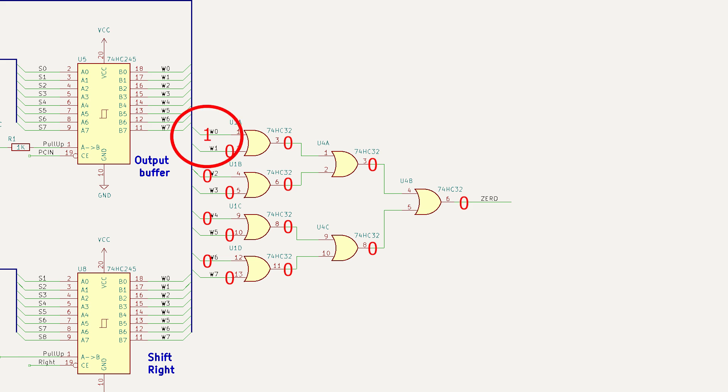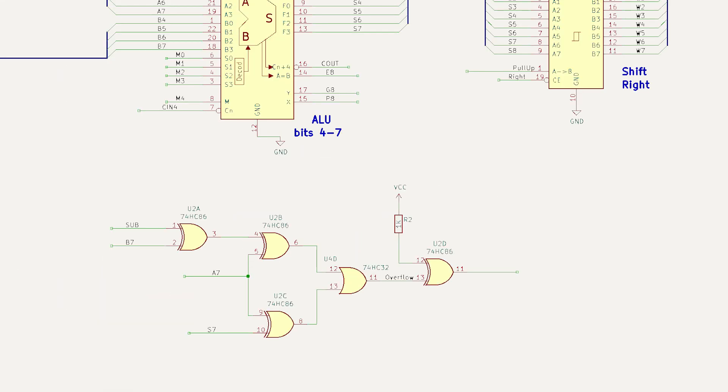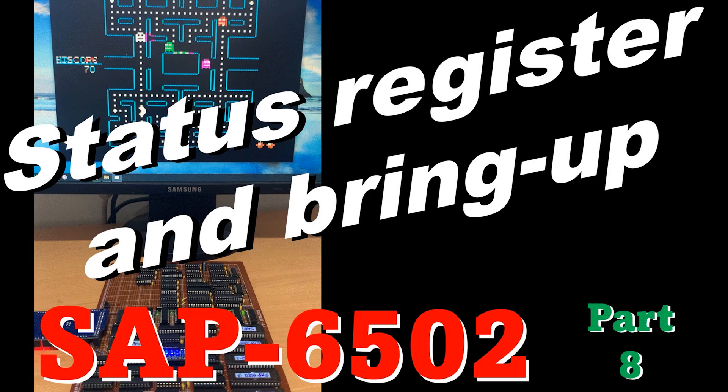Actually, this signal should be called zero bar and not zero, because it goes low when a zero is detected. The last piece of logic I'm going to need to put on the ALU card is the circuit for detecting overflow. We compare the sign of A, which is A7, against the sign of B, which is B7, based on whether we're performing an addition or a subtraction. Then we compare A7 with the sign of the result, which is S7. From this, we can figure out whether an overflow has occurred or not. I go over overflow in a lot more detail in the status video in the SAP 6502 playlist.